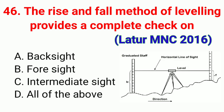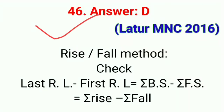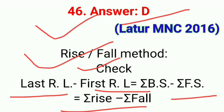Question number forty-six: The rise and fall method of leveling provides a complete check on. The correct answer is option D, all of the above. The arithmetic check for the rise and fall method is: last reduced level minus first reduced level equals sum of BS minus sum of FS, which equals sum of rise minus sum of fall.